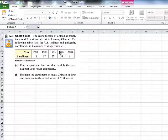I'm looking at number 123 from chapter 3. It says the economic rise of China has greatly increased American interest in learning Chinese. The following table lists the U.S. college and university enrollments in thousands to study Chinese. And then it gives us the data.